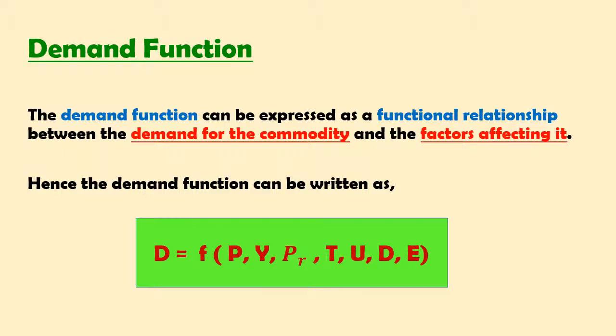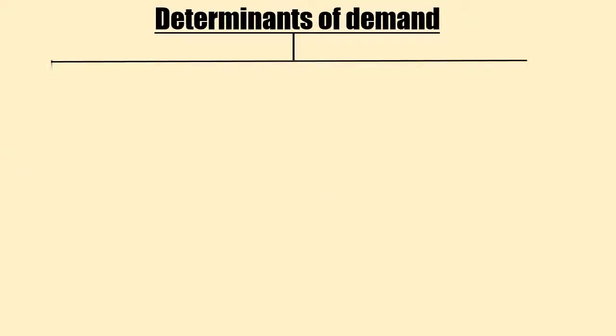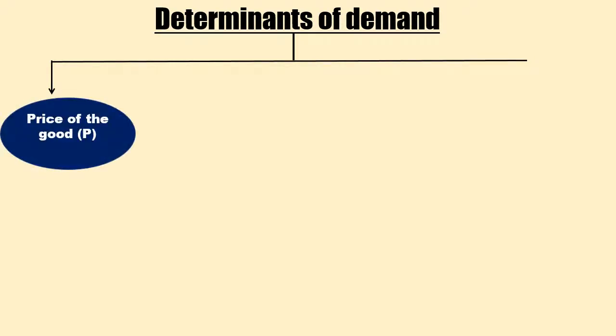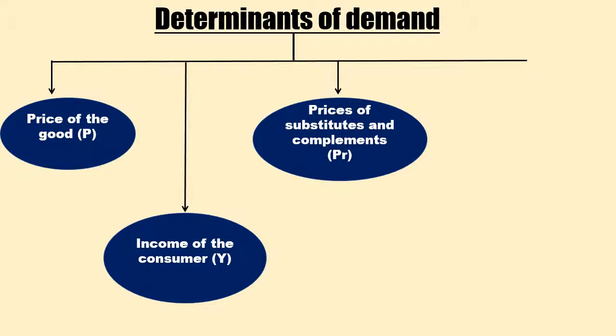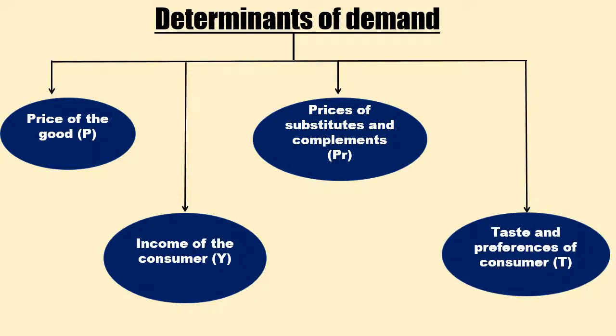Among all these factors, we are going to learn in detail about the most important determinants of demand. These are: price of the good, income of the consumer, price of substitutes and complements, and tastes and preferences of the consumer. Let us first discuss the most important determinant — price of the good, denoted by P.